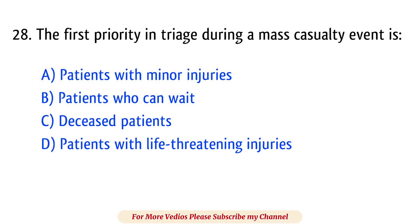Question number 28. The first priority in triage during a mass casualty event is? The right answer is option D: Patients with life-threatening injuries.